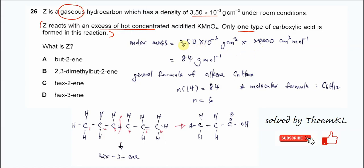So 3.5 × 10⁻³ gm per cm³ times 24,000 cm³ per mole. Therefore we will get the molar mass in gm per mole. So it's 84 gm per mole. This is the molar mass of the gas or the hydrocarbon Z.